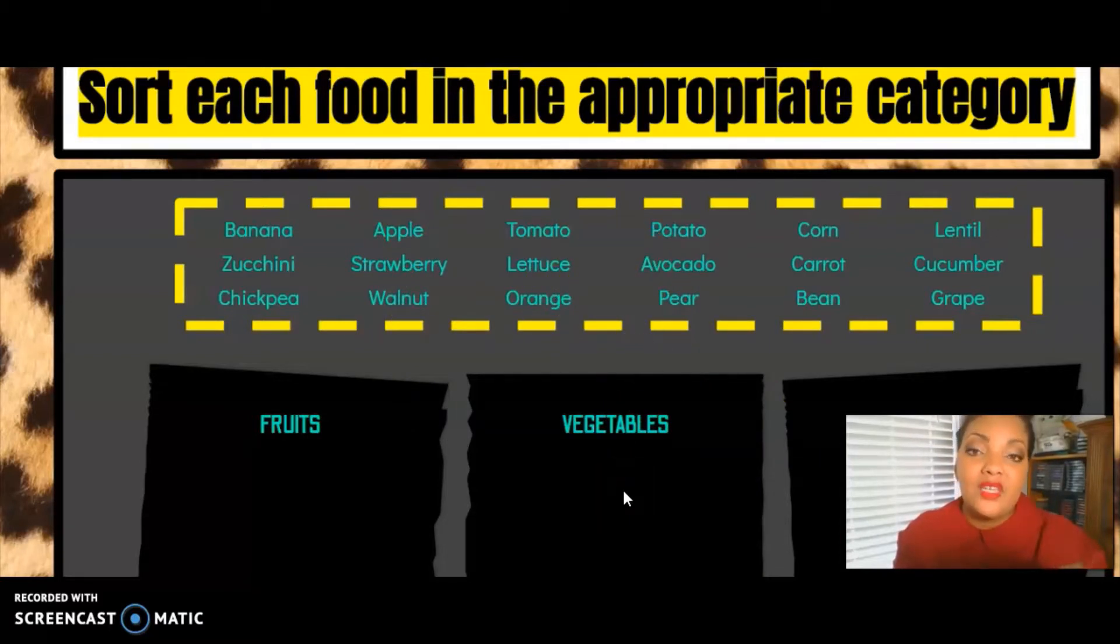And so another thing you could do here, instead of the text, you can use images. So you could Google the image of an avocado, of a potato, of corn, carrot, beans, so that you have the visual support instead of the words. And that's just going to be something that's based on your class, your grade level, your learners. But these are some examples of what you can do for drag and drop.